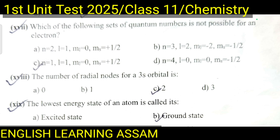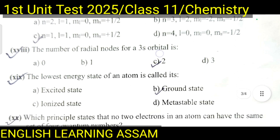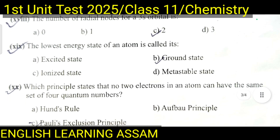Question number eighteen: The number of radial nodes for a 3d orbital — A. 0, B. 1, C. 2, D. 3. The correct option is A — 0 radial nodes.